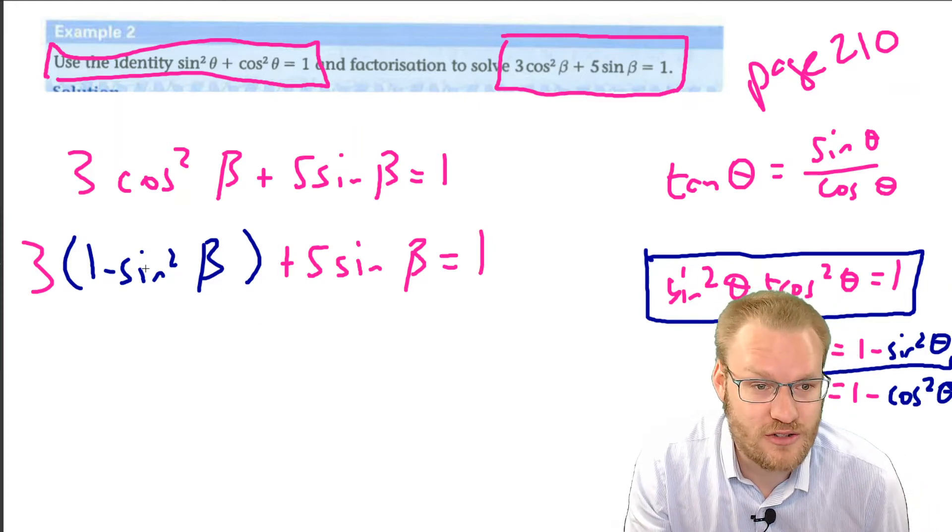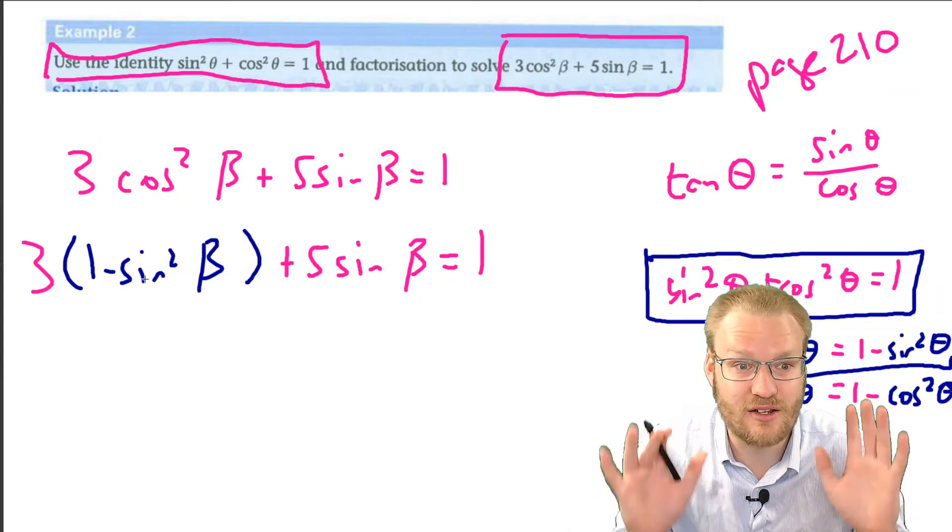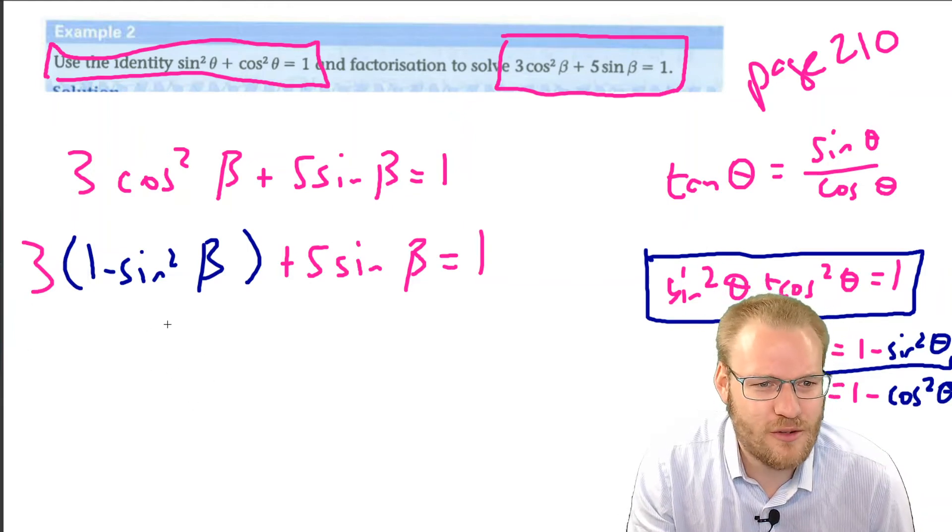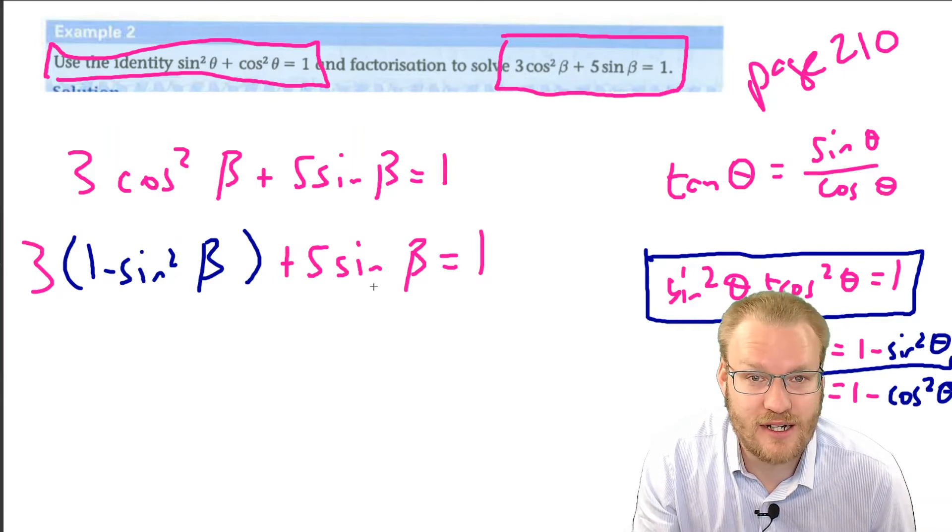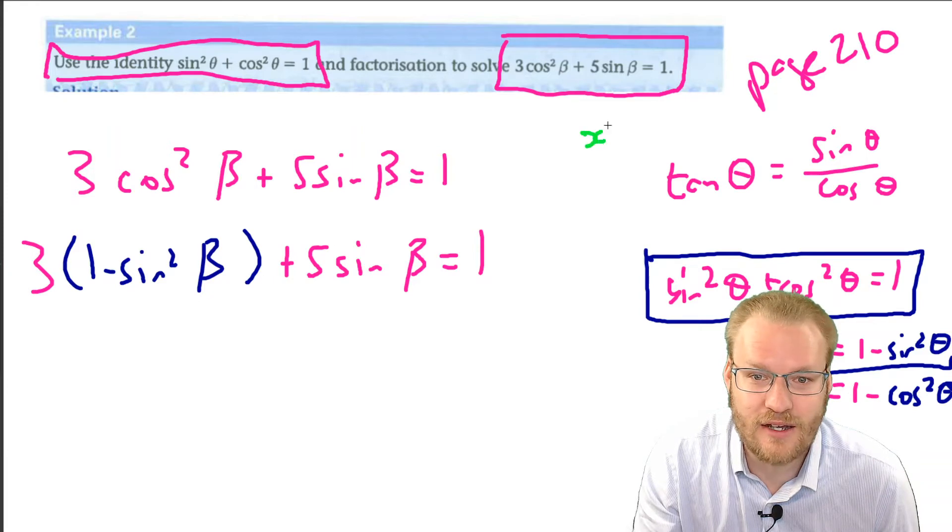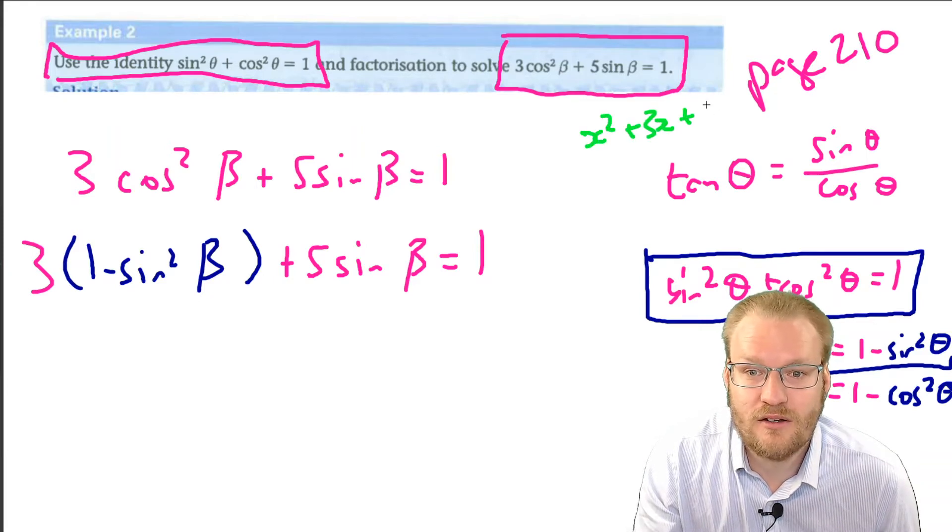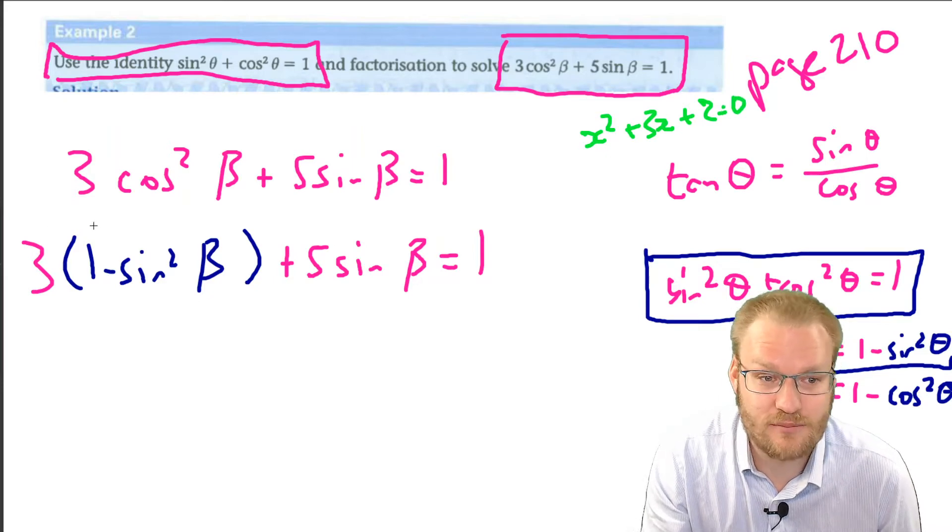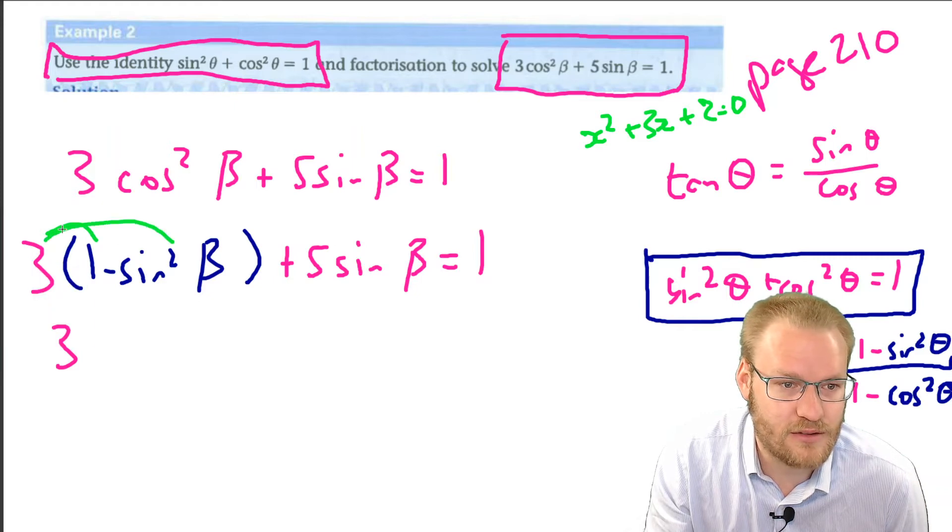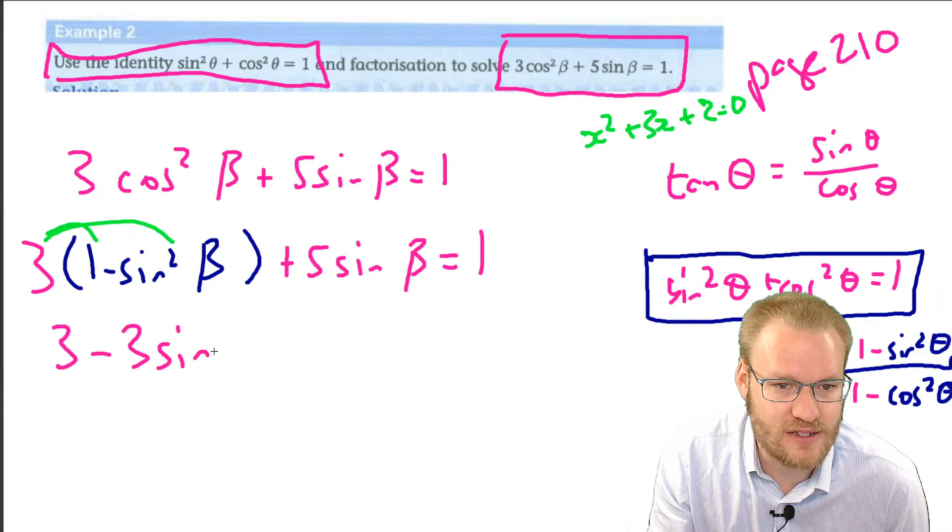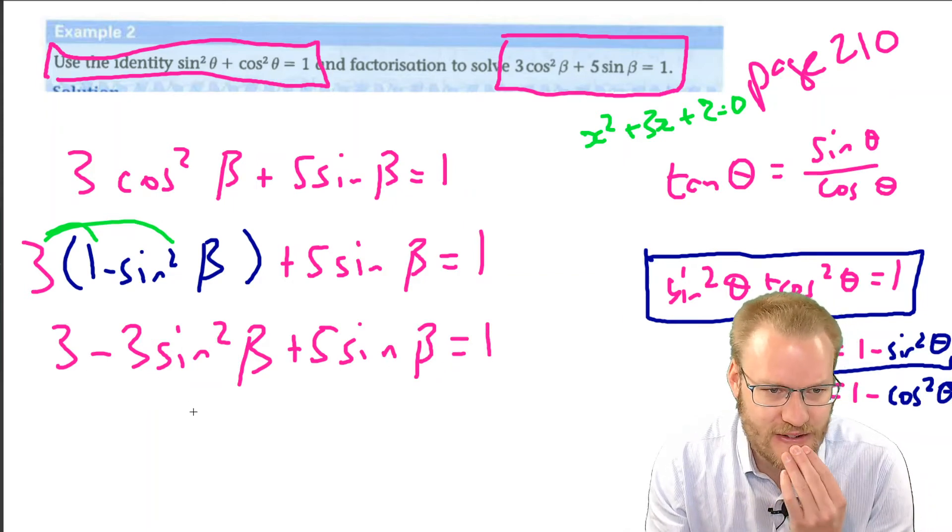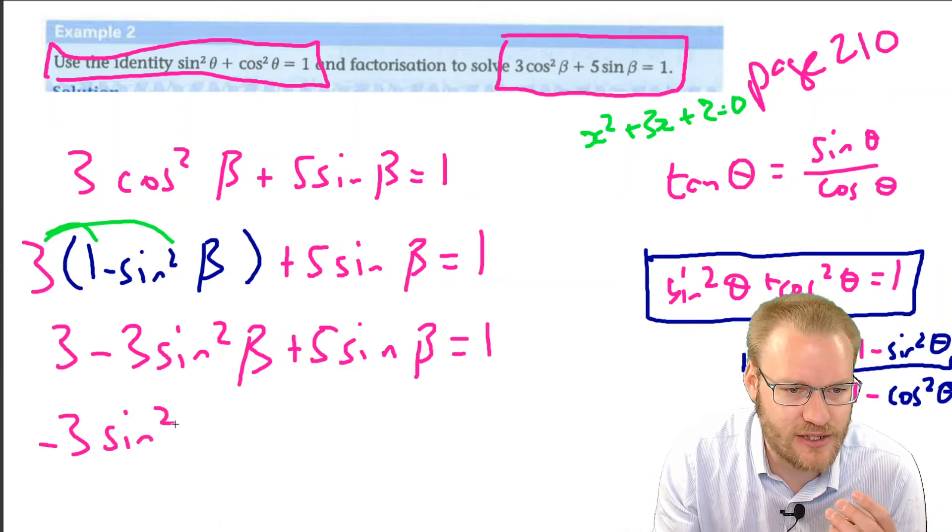Now we've got it down to one trig ratio, just sine. So from here, we've got sine squared and sine, so this makes us think of a quadratic equation. Let's multiply this out so we can get a nicer looking equation. 3 - 3sin²β + 5sinβ = 1.